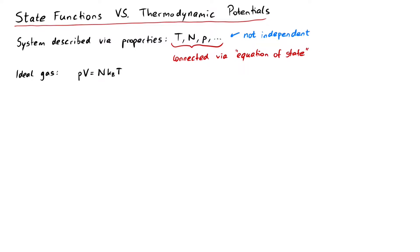PV equals nKBT, the ideal gas law. These equations of state cannot be derived. Instead, they are empirical relations found by conducting many experiments.